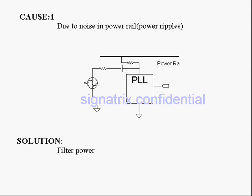The first cause is due to noise in the power rail. Here we have a PLL block, and to operate this PLL we have to supply power. We may use a power rail, and due to the noise in this power rail, it may affect the clock generation block inside the PLL. This is one cause for clock jitter.